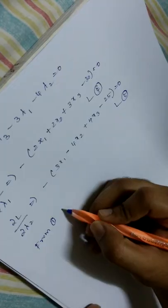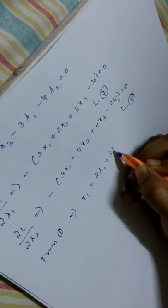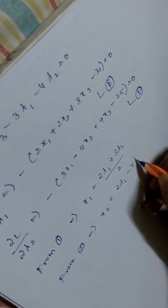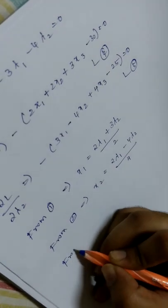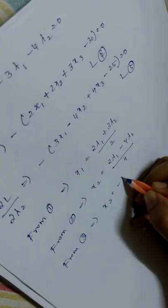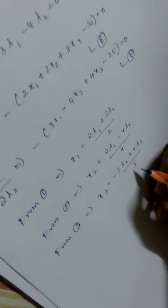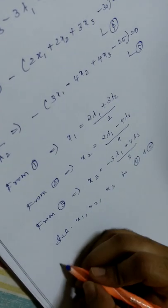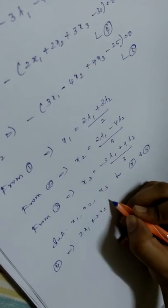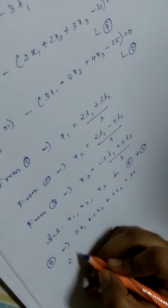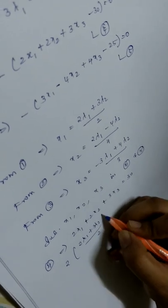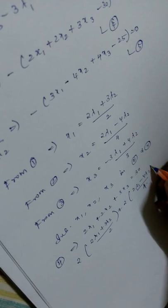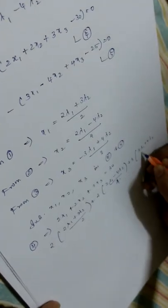From equation 1, x1 equal to (2 lambda 1 plus 3 lambda 2) divided by 2. From equation 2, x2 equal to (2 lambda 1 minus 4 lambda 2) divided by 4. We substitute the values of x1, x2 and x3 in equation 4 and equation 5.